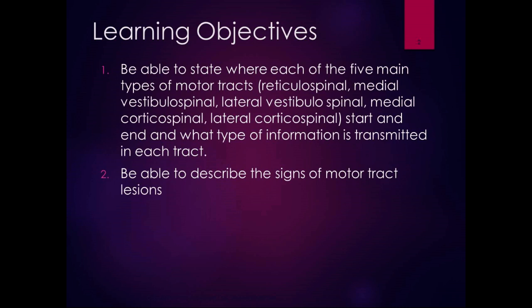The motor tracts are great because their name tells you where they go to and from. For example, a corticospinal tract goes from the cerebral cortex to the spine. All of the motor tracts end with the word 'spinal,' meaning they all end in the spine. That's where they synapse with the lower motor neurons, and they come from different areas of the brain.